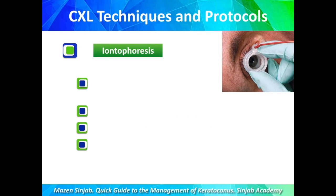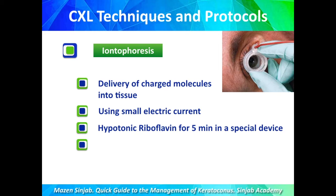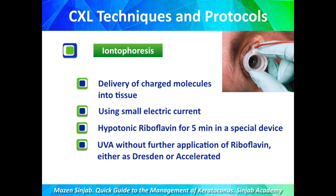In iontophoresis, charged molecules are delivered into the tissue using a small electric current. Hypotonic riboflavin is applied for five minutes using a special device. After that, UVA is applied without further riboflavin application, using either the Dresden protocol (3 mW/cm² for 30 minutes) or the two evidence-based accelerated options of 9 mW/cm² or 18 mW/cm².